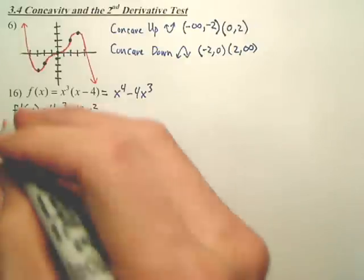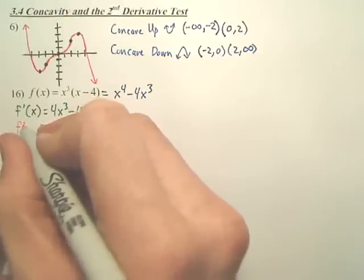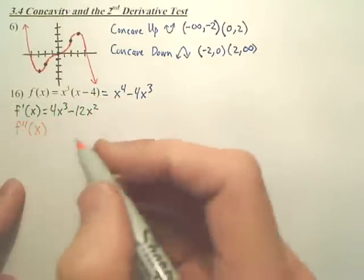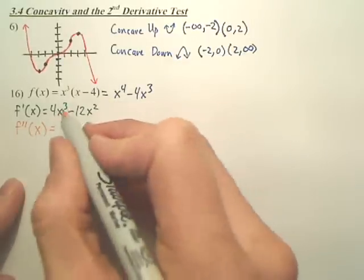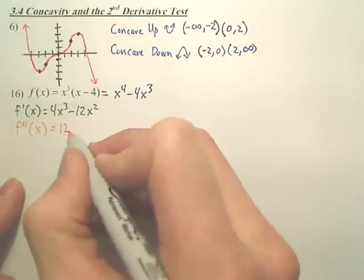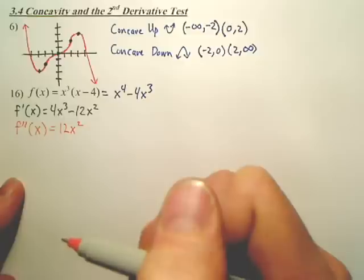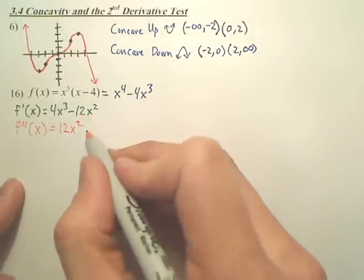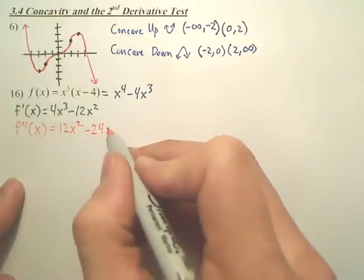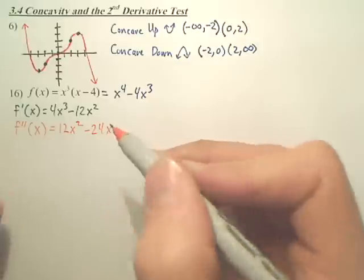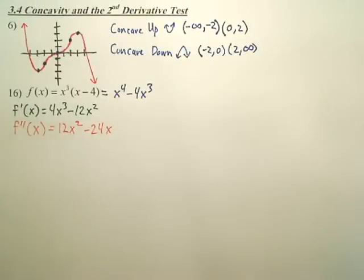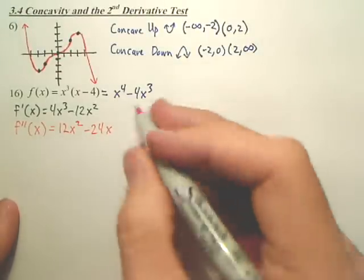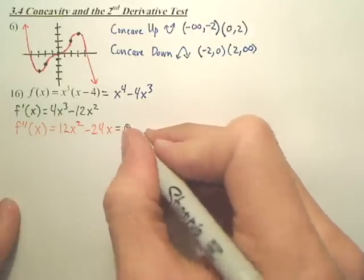Our second derivative, because that's what we're going to set equal to 0. It has two little marks, by the way. Derive this. Well, 3 times 4 is 12. Bring down the power of the exponent. And 2 times negative 12 is negative 24. Bring down the power, makes it a 1. And for a point of inflection, we set the second derivative equal to 0.